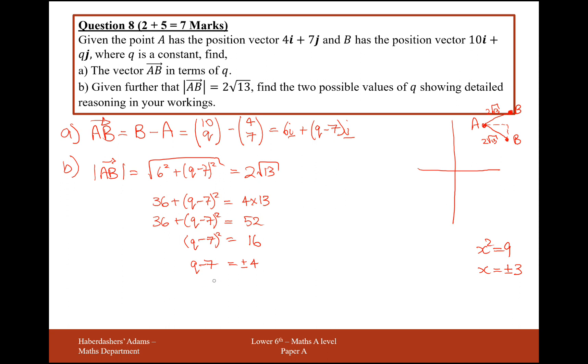So now we've got to add 7 onto that. So let's take q minus 7 equals 4. So q is therefore going to equal 11. Or q minus 7 could equal minus 4, in which case if we add on 7 here, we're going to get 3. So the answer here is either q equals 11 or q equals 3.